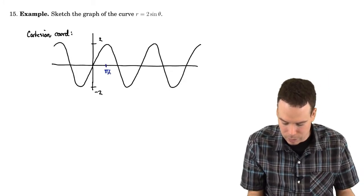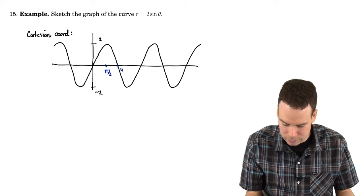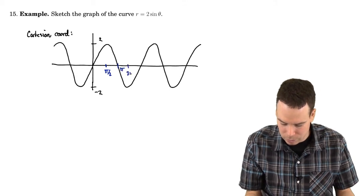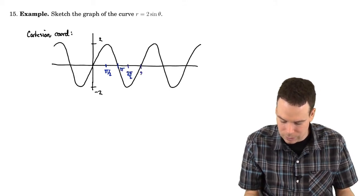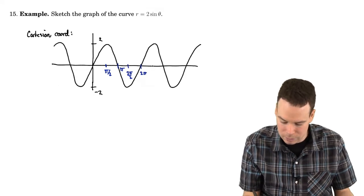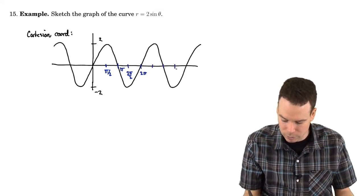What are the main features here? Well it peaks out at pi by 2, it crosses at pi, it bottoms out at 3 pi by 2, crosses again at 2 pi, and then it just repeats itself. And it keeps going all the way along.